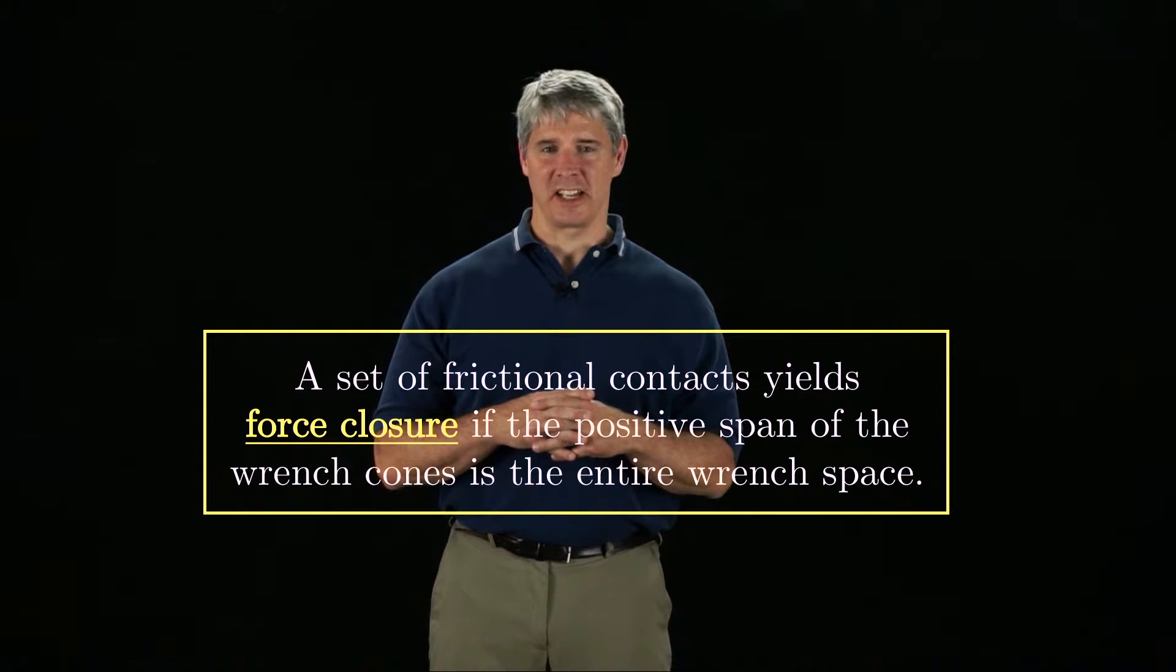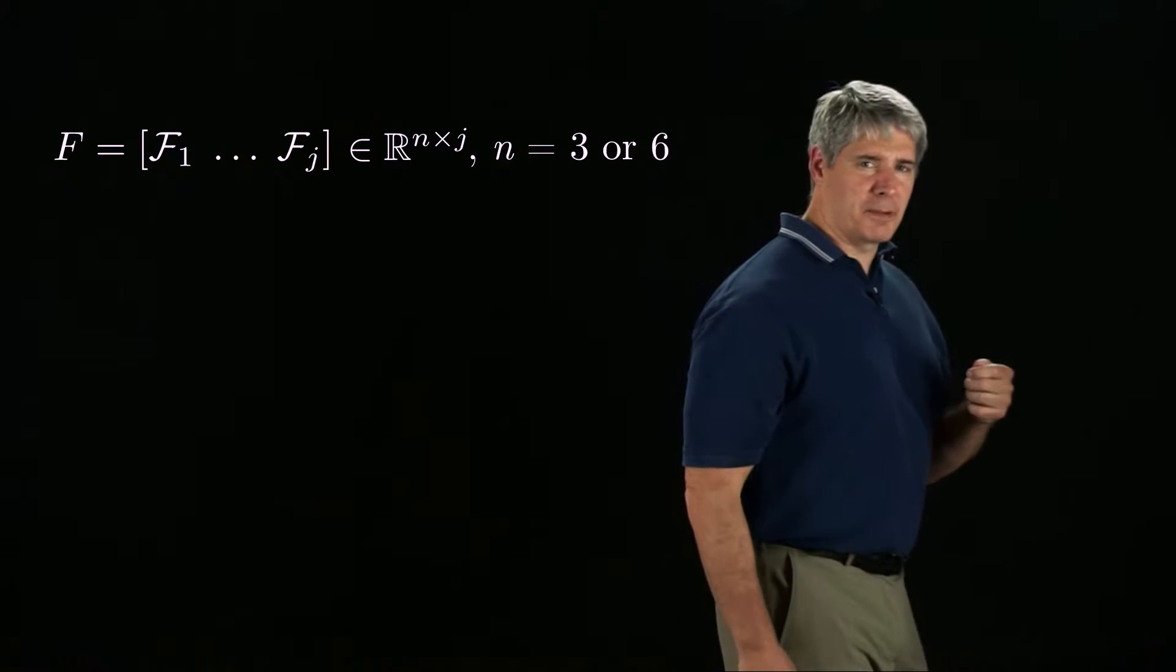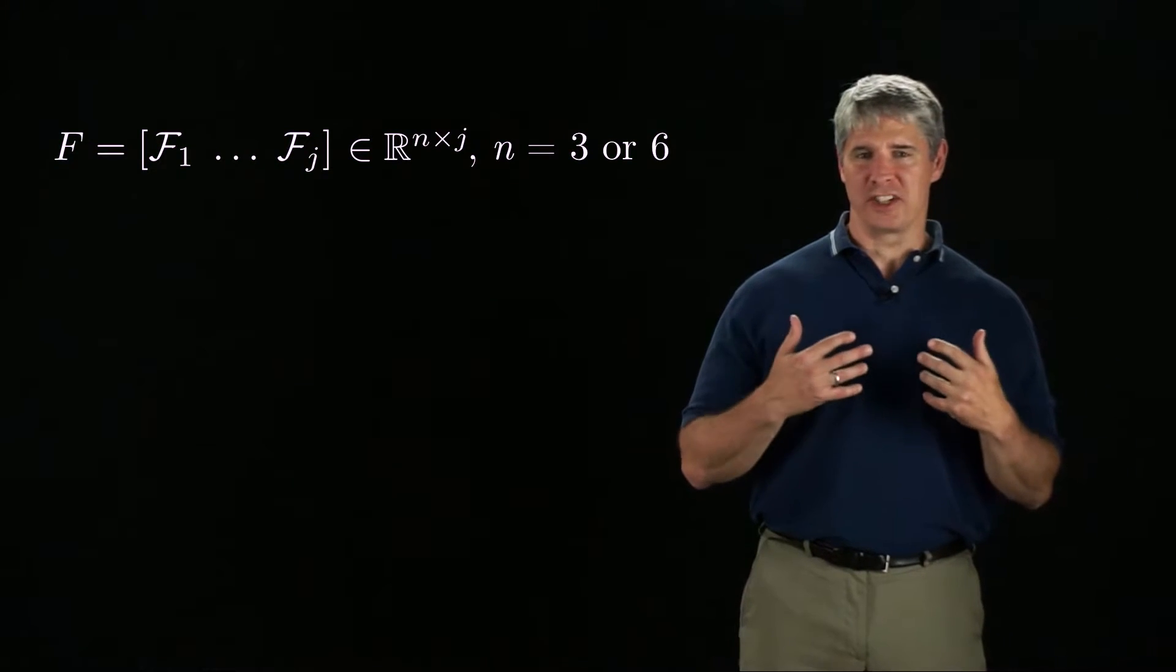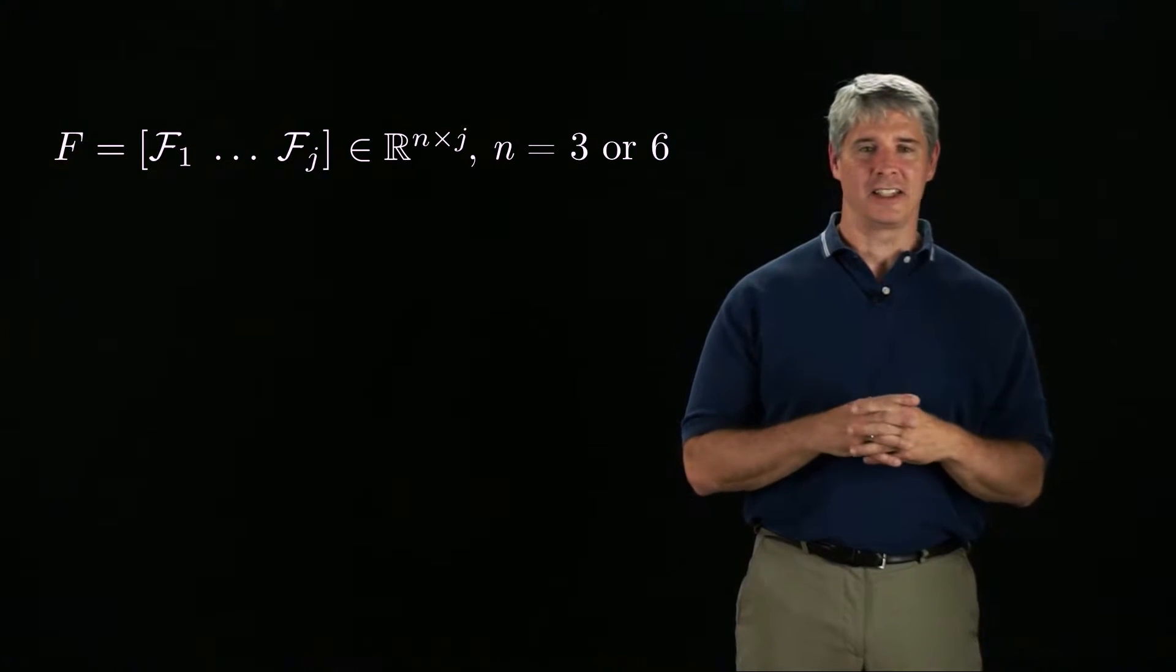The test for this condition is essentially the same as for first-order form closure. First, we construct the matrix F, whose columns are the J friction cone edges of the contacts.